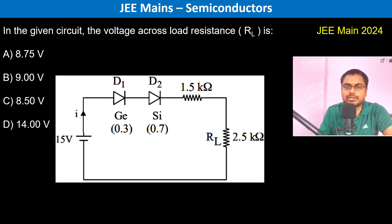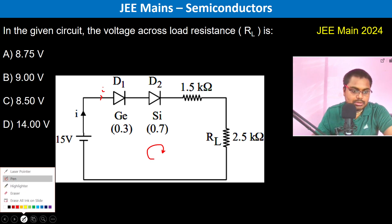In the given circuit, the voltage across load resistance RL should be... So this is I current. The same I actually flows like this. By Kirchhoff's loop law, if we do, what is going to happen?